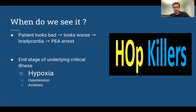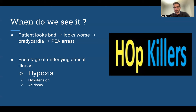This is really due to the end stage of underlying critical illness. The HOP KILLERS mnemonic is one most of us learned when studying resuscitation and intubation. It was created to highlight the importance of addressing and fixing underlying problems — resuscitating patients before we intubate them. H stands for hypotension, O for hypoxia, and P for acidosis. These are really big things that if you don't improve, stabilize, and resuscitate before intubation, you're putting the patient at high risk for decompensation and cardiac arrest.